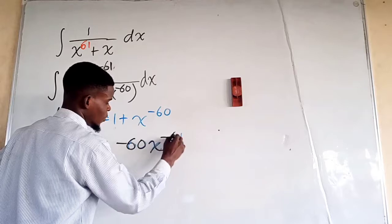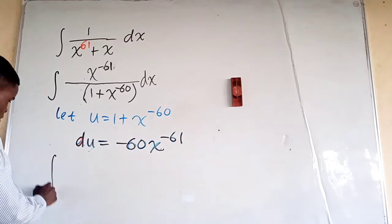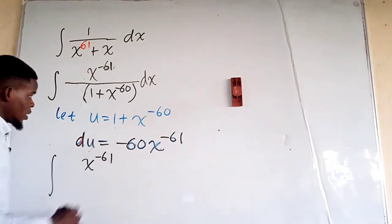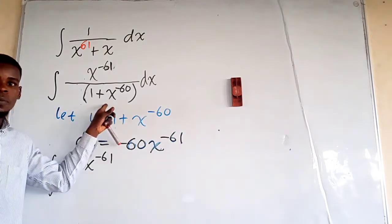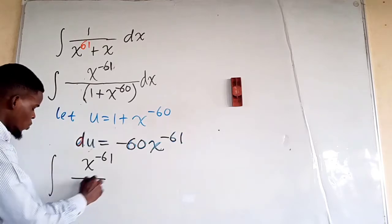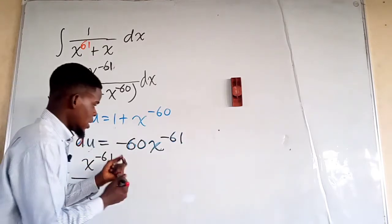So we substitute everything back into the integral sign. We're going to have x to the power negative 61. The denominator 1 plus x to power negative 60—this is the same thing as u, so we put down u in the denominator.